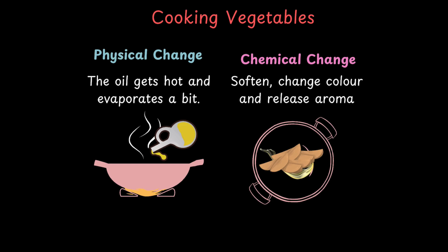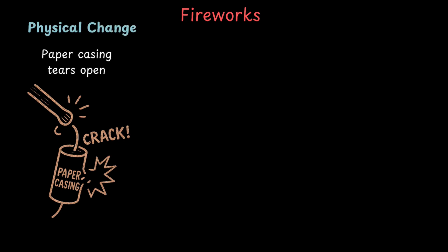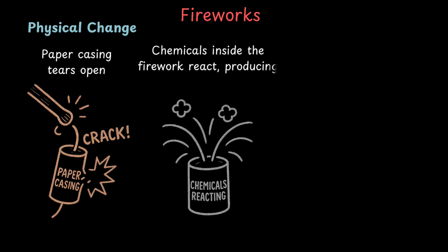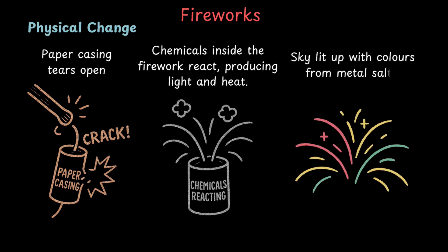The same thing goes with fireworks during Diwali. Apart from being bright, colourful and super fun, fireworks are a science show in the sky. First, when a firework is lit, the paper casing tears open — that's just the material breaking apart, a physical change. Then chemicals inside the firework react, producing light and heat. We see the sky lit up with colours from metal salts: strontium gives red, barium gives green, sodium gives yellow. That's all chemical change. So just like with a candle or cooking, in a firework too, physical and chemical changes can take place together.